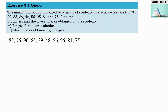Welcome to Learn Yourself, Exercise 3.1, Question Number 6. The marks out of 100 obtained by a group of students in a science test are 85, 76, 90, 85, 39, 48, 56, 95, 81, and 75. Find the highest and lowest marks obtained by the students, range of the marks obtained, and mean marks obtained by the group.